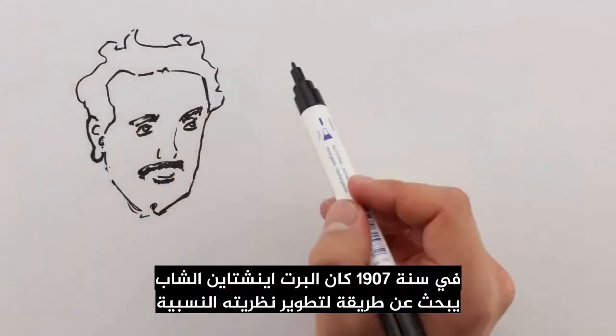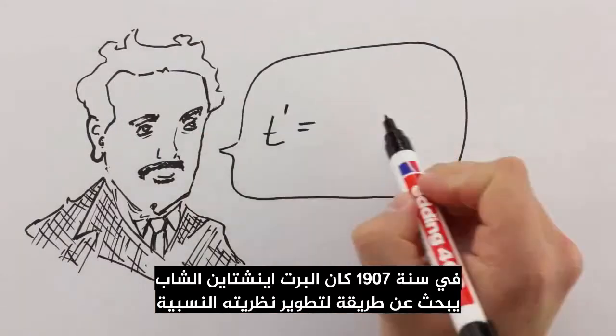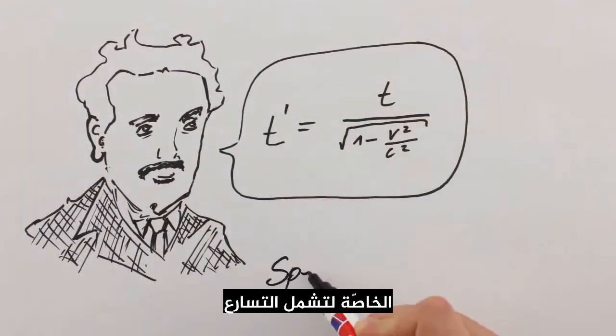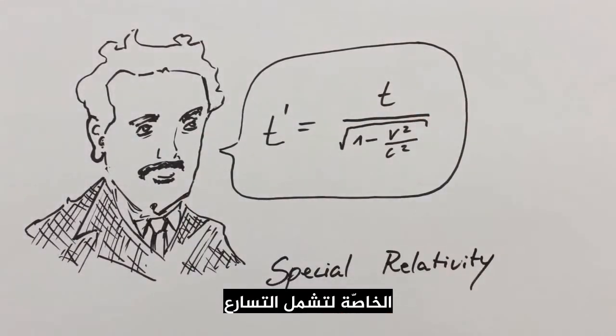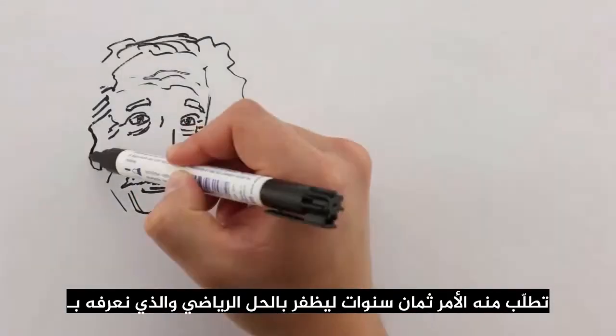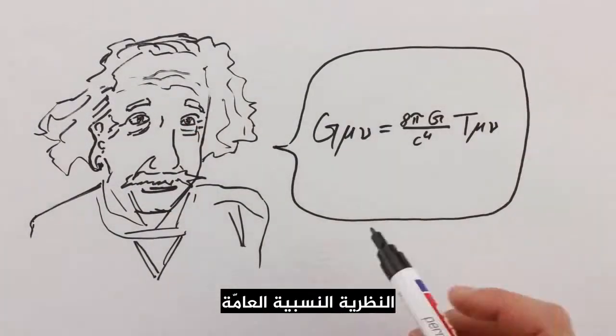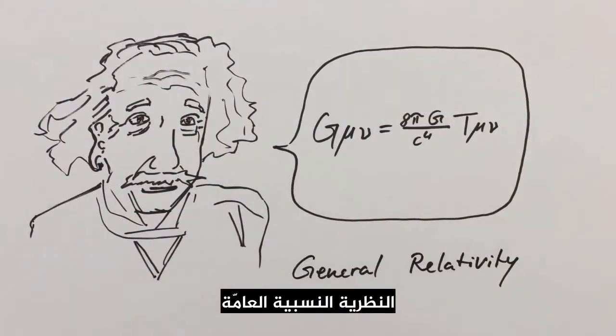In 1907, a young Albert Einstein was looking for a way to extend his special theory of relativity to include acceleration. It took him eight years to come up with a mathematical solution that we know as the general theory of relativity.